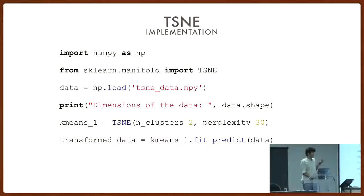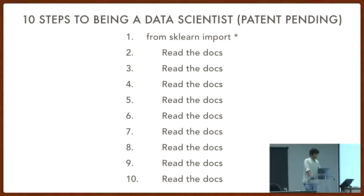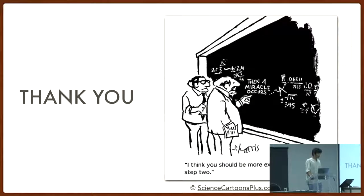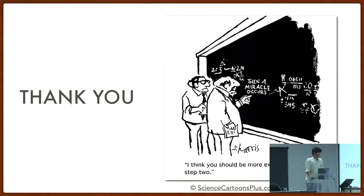All three algorithms I talked about are implemented in scikit-learn — an extremely powerful library with a huge and brilliant community and active development. To be a data scientist, you basically just need this. If you're interested in understanding your data, all you really have to do is find the name of an algorithm, go to scikit-learn, push your data through it, see what it's doing, look at the space, use matplotlib, plot whatever you need, read the documentation, read it again, and look at a blog. It's actually as easy as that. I've tried to toe the line between scientific rigor and intuition — thank you, any questions?